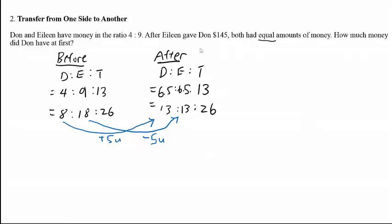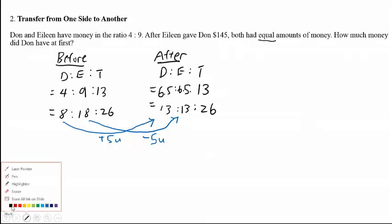This makes perfect sense, because Eileen gave Don $145. So if Eileen minus 5 units, those 5 units must go over to Don. That's why Don has an addition of 5 units. Therefore, these 5 units represent the amount transferred, which is $145.